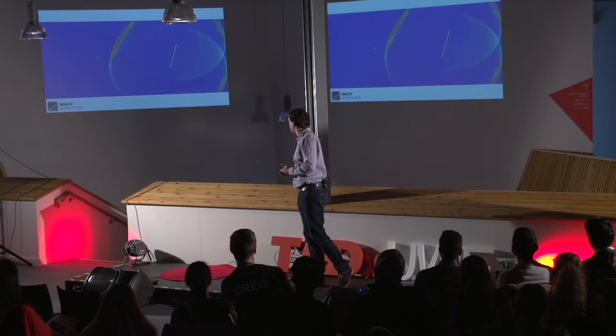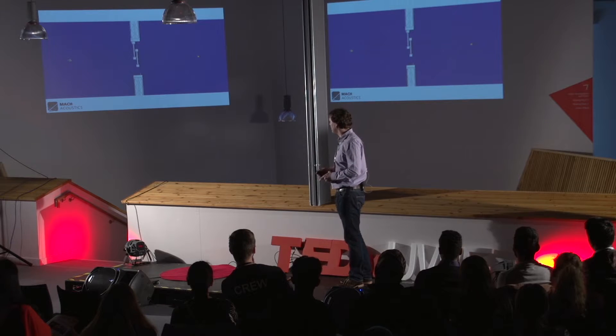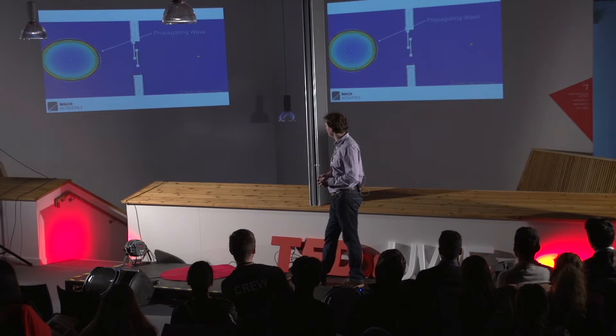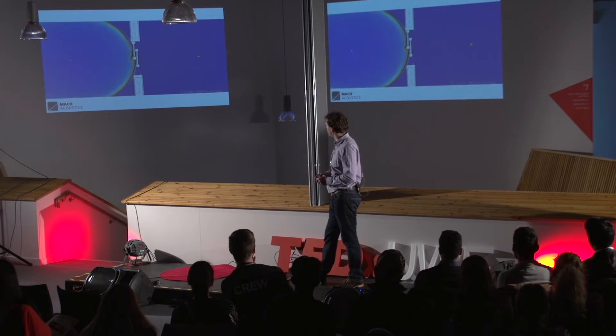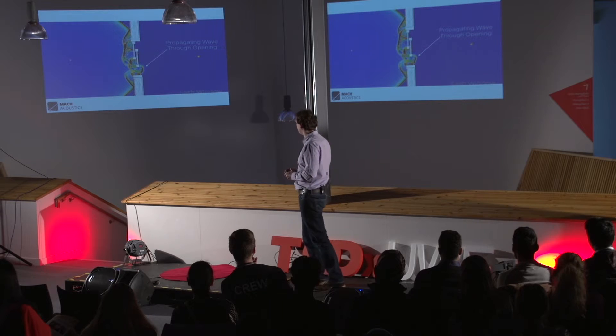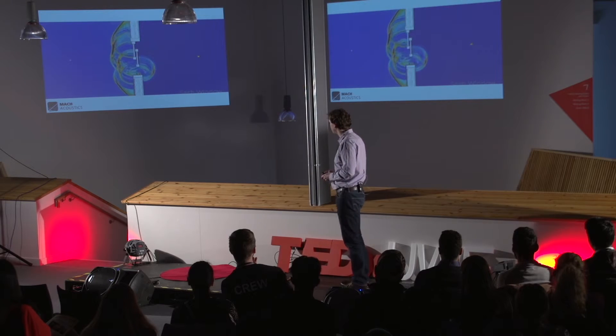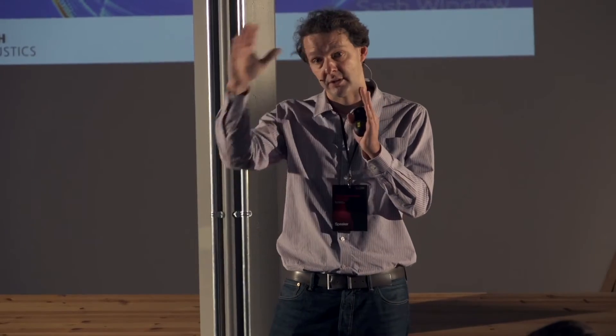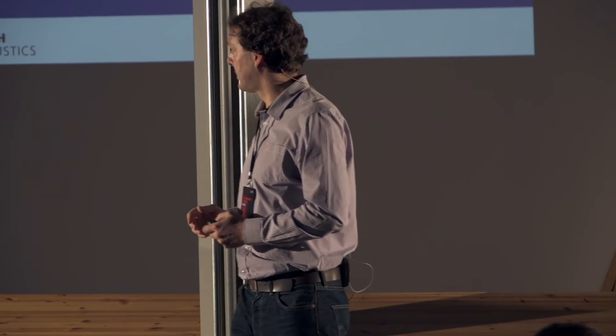So we can then take this technology and start to study the difference between a sash window and other types of windows. So that's the propagating wave. You can now see it reflecting off the structure. And you can see it coming through the opening and radiating into the room. That's fairly simple. And it's more or less what you would expect. It's a simple hole. What comes out the other side is round and spherical.